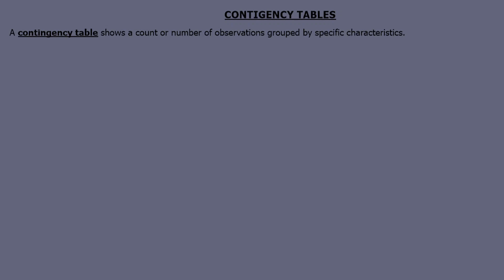Contingency tables are basically tables which show a count or a number of observations grouped by specific characteristics. So if we need groups or characteristics, you no longer use event diagrams — instead, you use contingency tables.